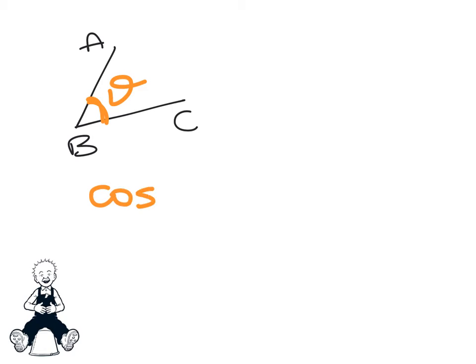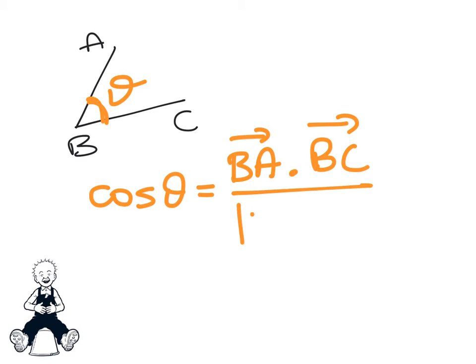We're going to use the formula that cos theta is equal to BA dotted with BC divided by the length of BA times the length of BC.